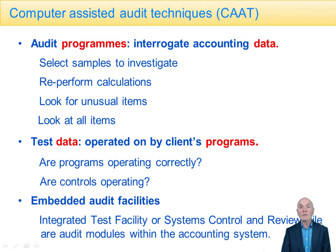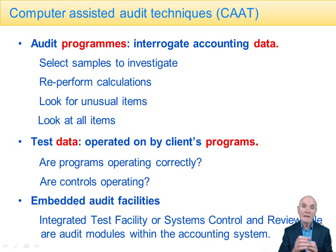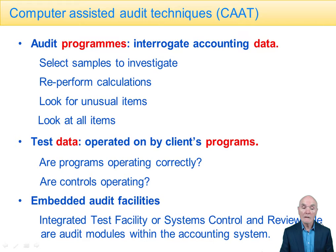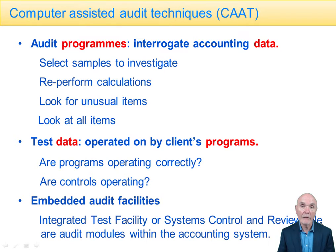Or consider age receivables listings — listings that you're going to use for your valuation of receivables. What happens if one category is misallocated and they begin including relatively old debts as though they were relatively young? You can also look for unusual items, for example: negative balances in inventory, credit balances on receivables, debit balances on payables, or inventory which hasn't moved at all for the last three months. These are all potentially unusual items.